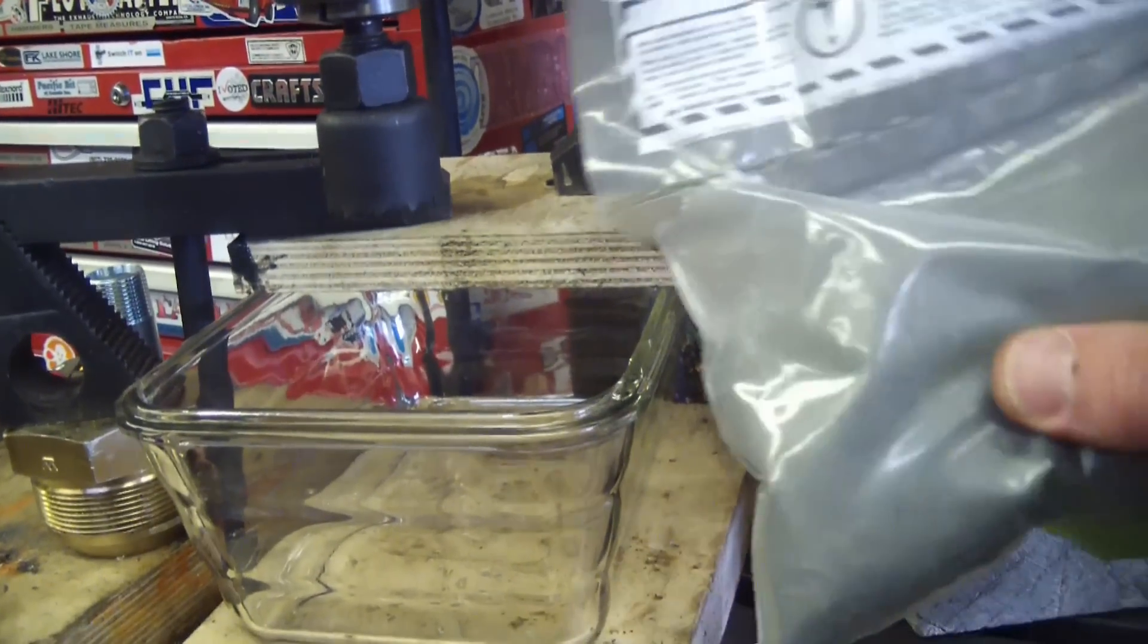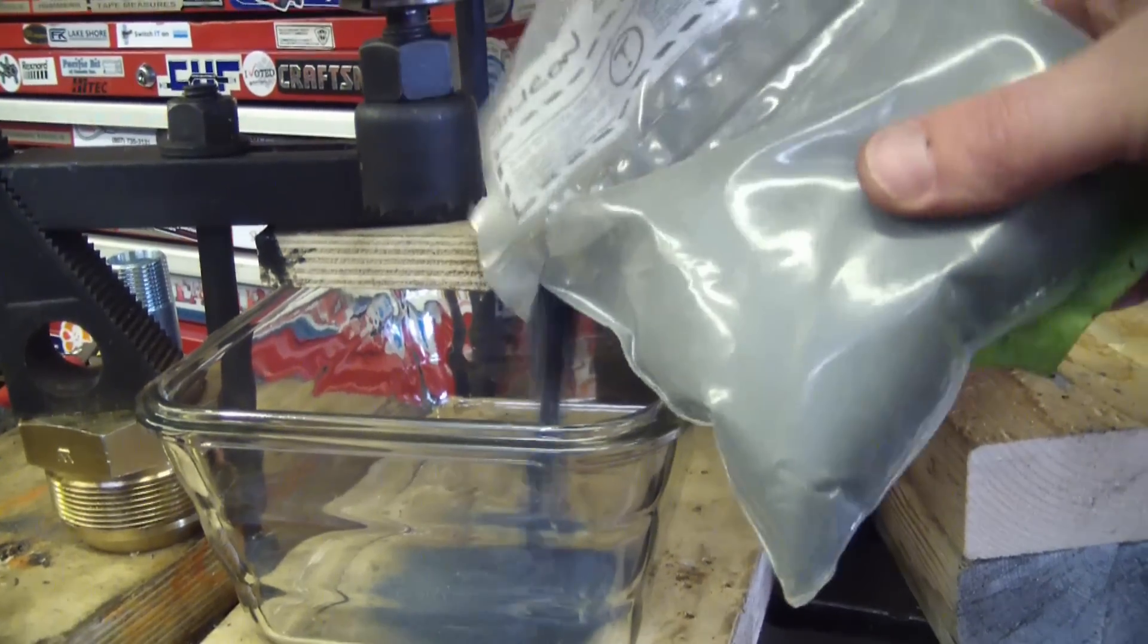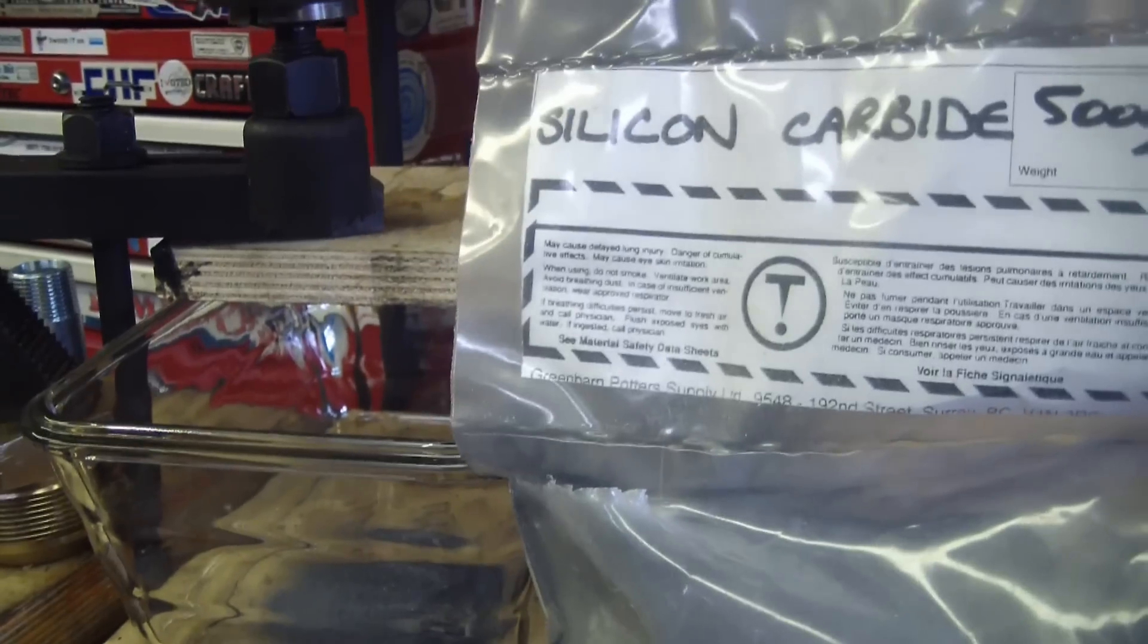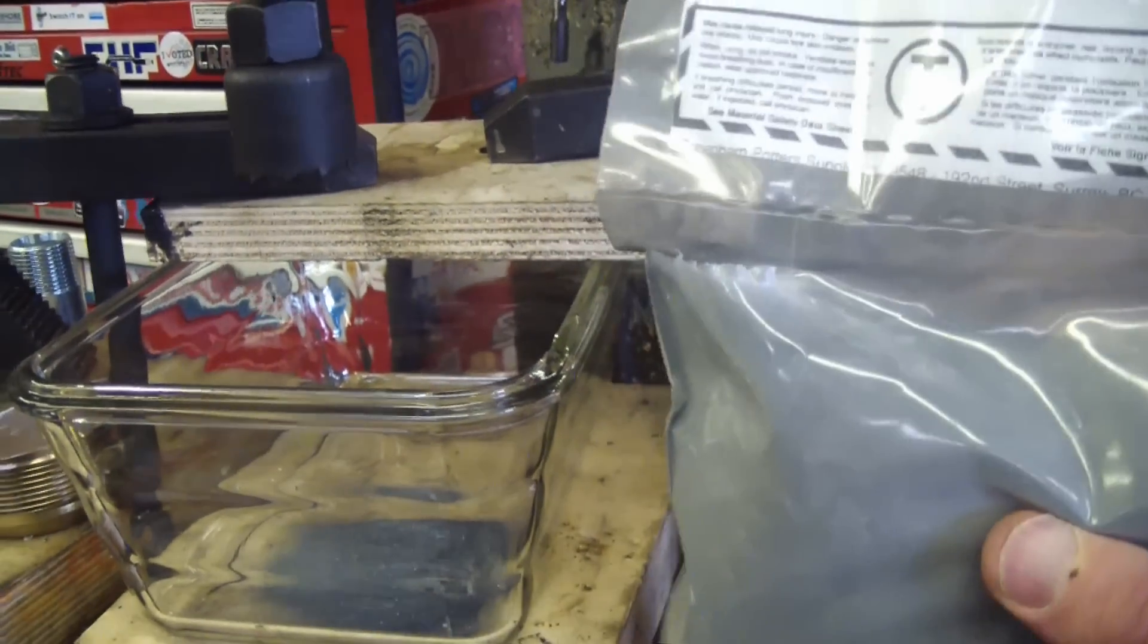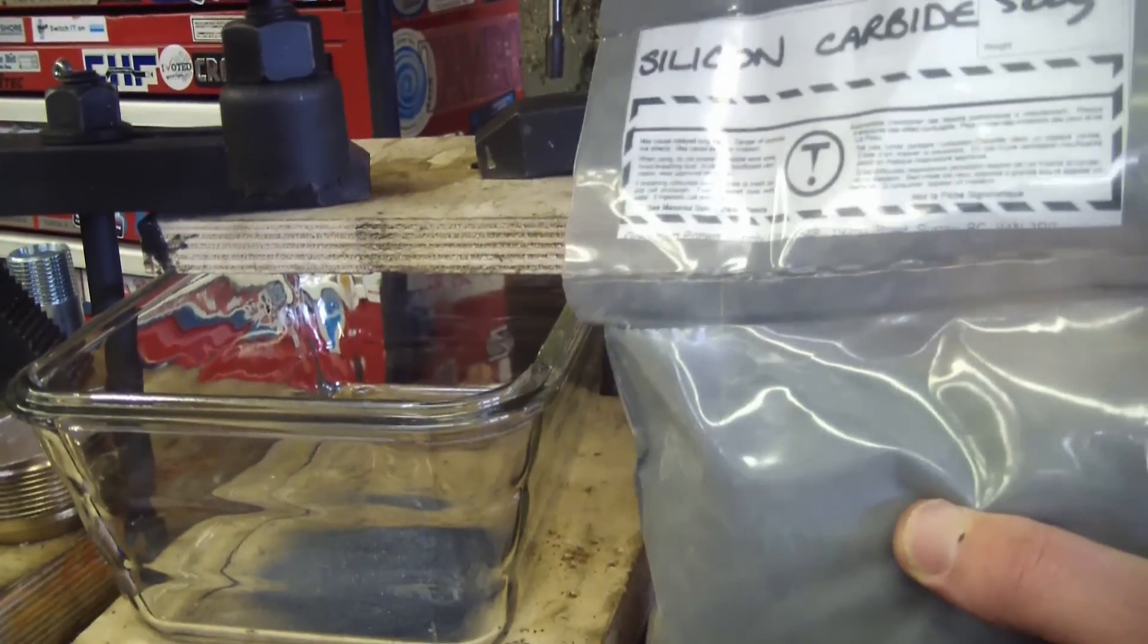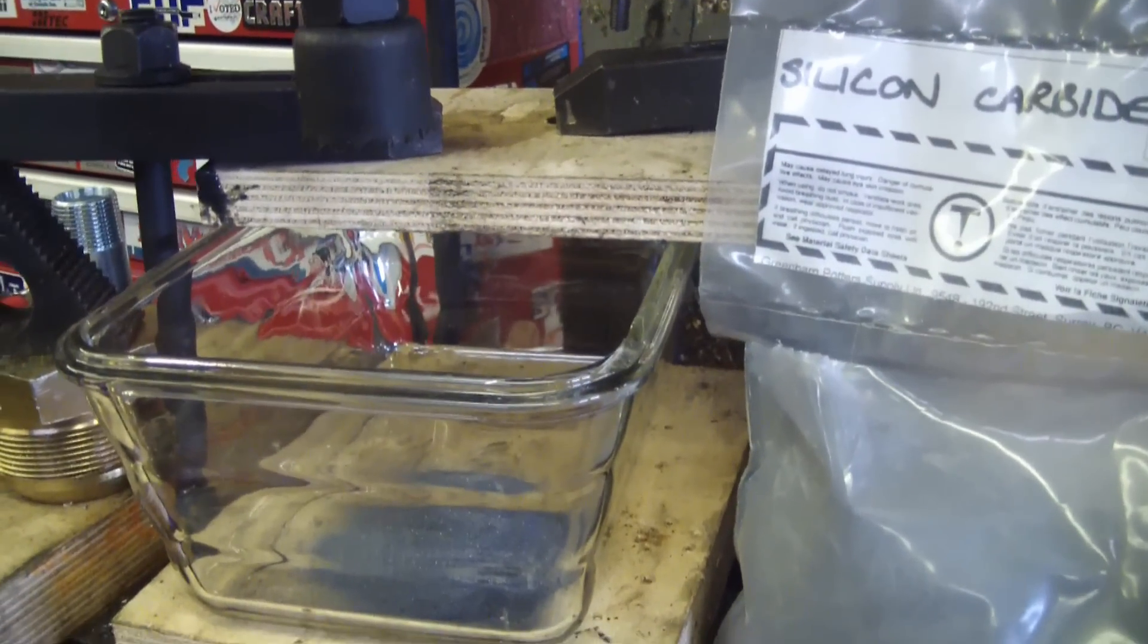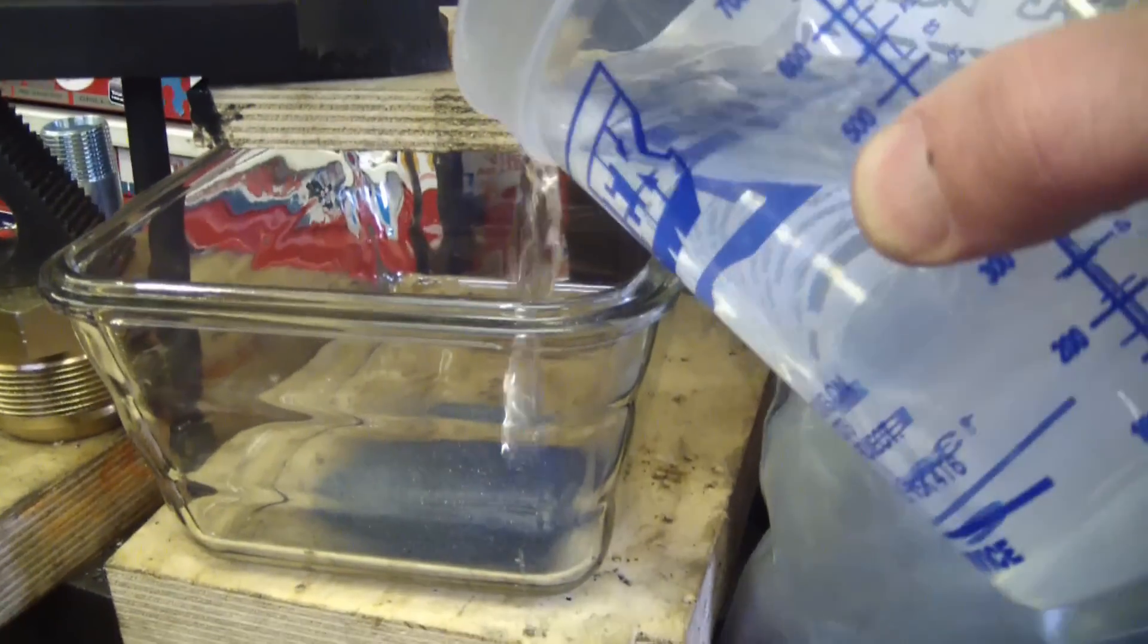So we're going to add the silicon carbide. This stuff is bad for you. I don't know how bad, but if they just put warnings like this will make your dingus fall off, then you're guaranteed everybody would be wearing a respirator. But long-term toxicological damage, who cares? I'll be dead and gone before that bothers me. Anyway, filter it through a cigarette, you'll be just fine.